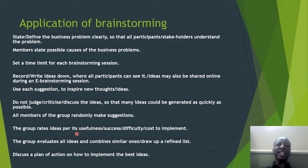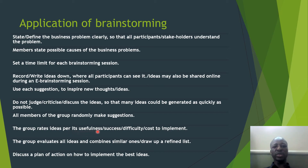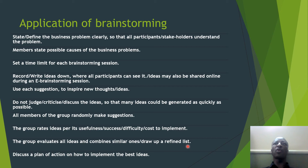The group rates ideas by their usefulness, success, difficulty, and cost to implement. Ideas from different individuals are different in terms of value, so they are supposed to be rated — whether this idea is useless or useful. The group then evaluates all ideas, combines similar ones, and draws up a refined list. Ideas which are similar are combined, those which are different are separated, and others are refined so that they may be clear.